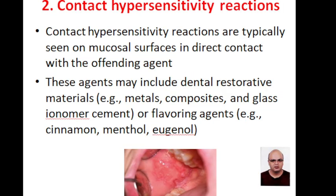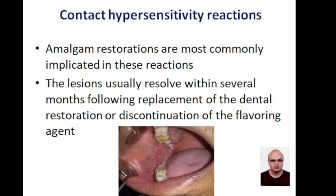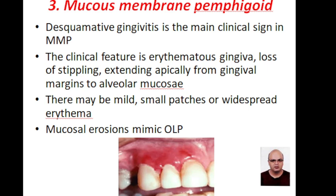Contact hypersensitivity reactions are typically seen on the mucosal surface in direct contact with offending agents. These offending agents may include dental restorative materials or flavoring agents, for example menthol and eugenol. Amalgam restorations are most commonly implicated in these reactions. The lesions usually resolve within several months following replacement of the dental restoration or discontinuation of the flavoring agent.